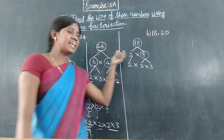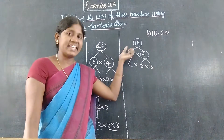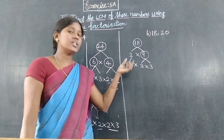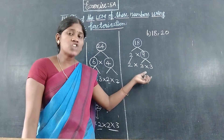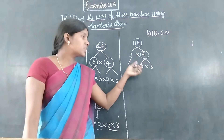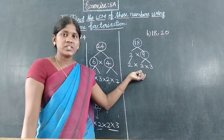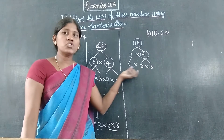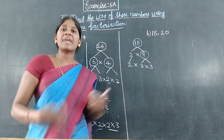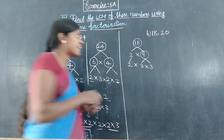So 18 equals 2 times 9. Two is circled as prime. Nine is composite, so again we break it: three threes are 9. Finally, 2 and 3 are both prime numbers, so the factorization of 18 is complete.